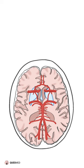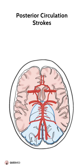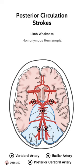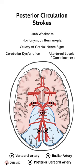Don't forget about posterior circulation strokes. This group includes occlusions of the vertebral arteries, basilar artery, and posterior cerebral arteries. You can get anything from limb weakness and homonymous hemianopia to a variety of cranial nerve signs, cerebellar dysfunction, and altered levels of consciousness.